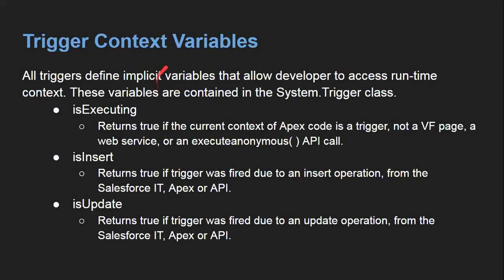Next is trigger context variables. Until now we discussed briefly about trigger events — before and after. Now we have trigger context variables that we can use while implementing triggers. All triggers define implicit variables that allow the developer to access runtime context. These variables are contained in the System.Trigger class. The first one is 'isExecuting'.